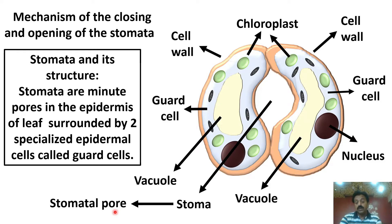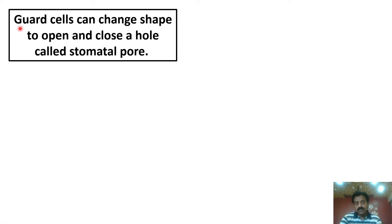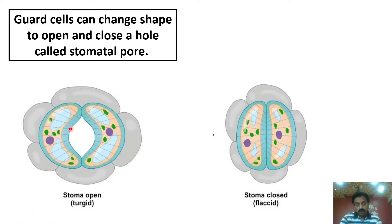So first we have clarified the structure of stomata. Now we come to why they open and why they close. Dear students, guard cells can change shape to open and close a hole called the stomatal pore. Sometimes that pore opens and sometimes it closes. Here you can see the pore is open, and here the pore is closed.